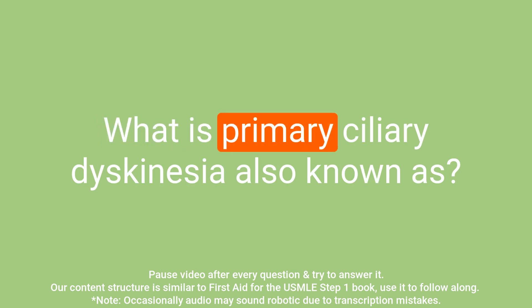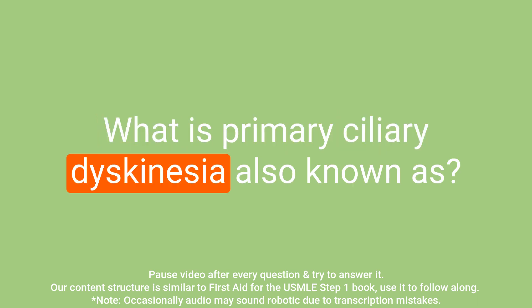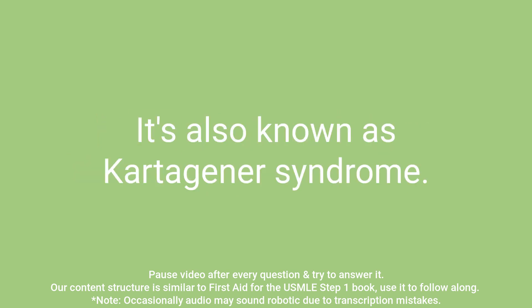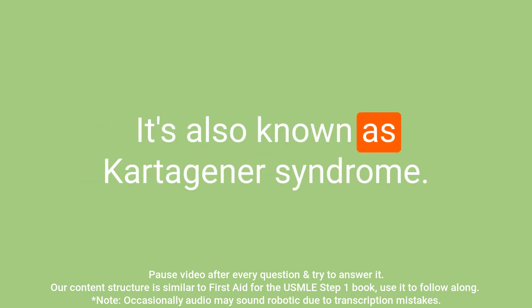Question: What is primary ciliary dyskinesia also known as? Answer: It is also known as Kartagener syndrome.